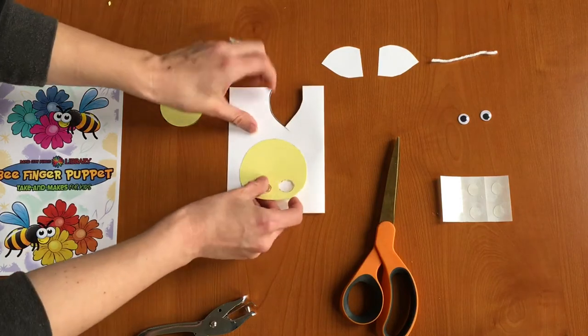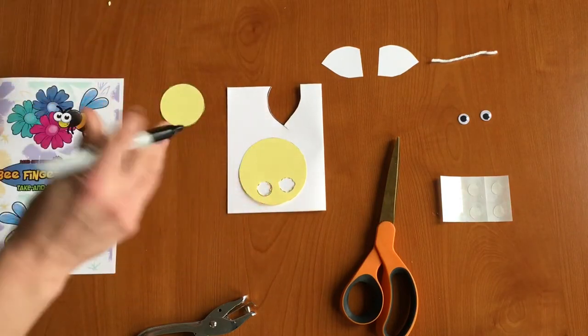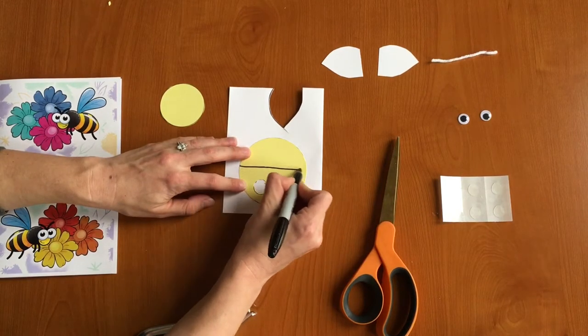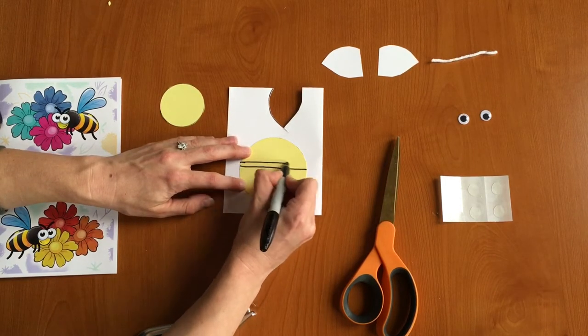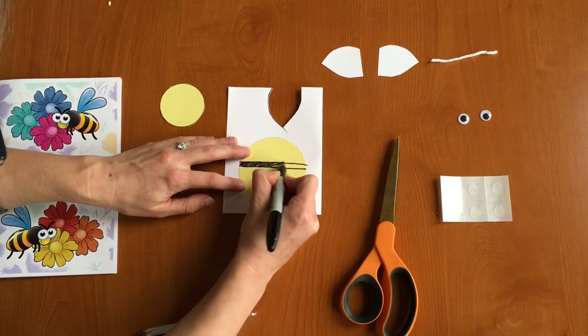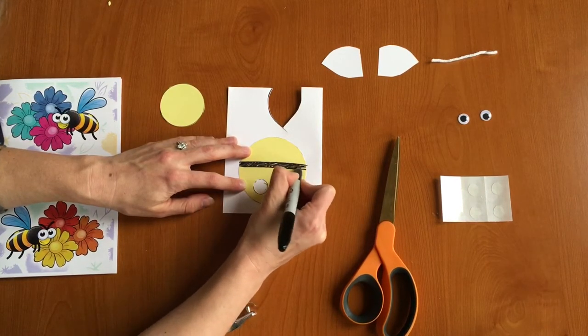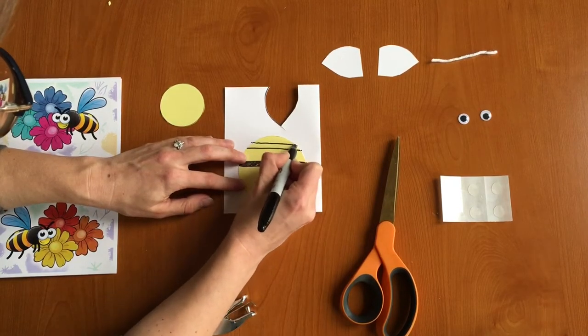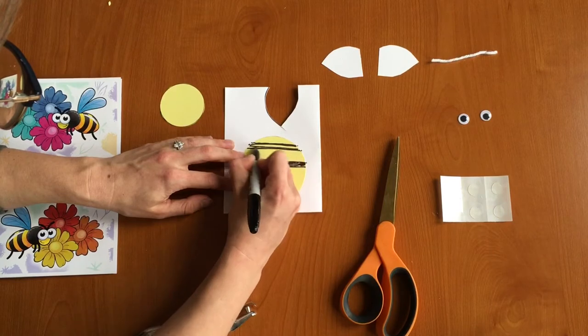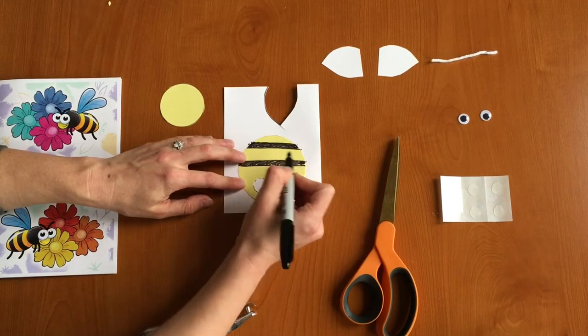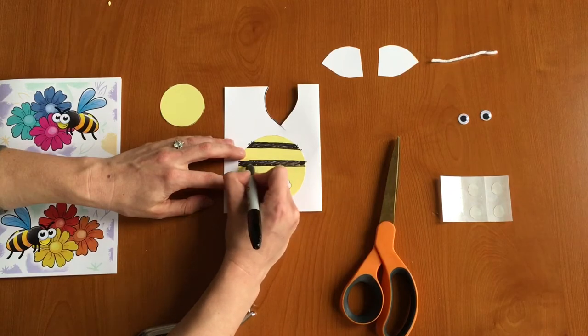So I'm going to put something in the background there so that I don't get marker on my table and we're just going to start drawing some black stripes just like a bee would have and we'll color it in. And we'll add some more. You can add as many stripes as you want or as few as you want, but bees do have stripes so we want to make sure to add a few.